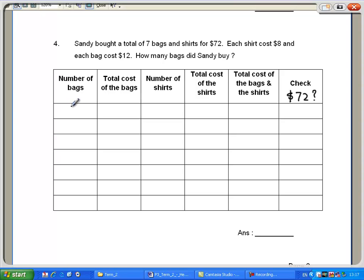Let's guess, since it's 7, somewhere in the middle, let's guess 3. If I guess 3 bags, how many shirts did she buy? 7 minus 3, 4.